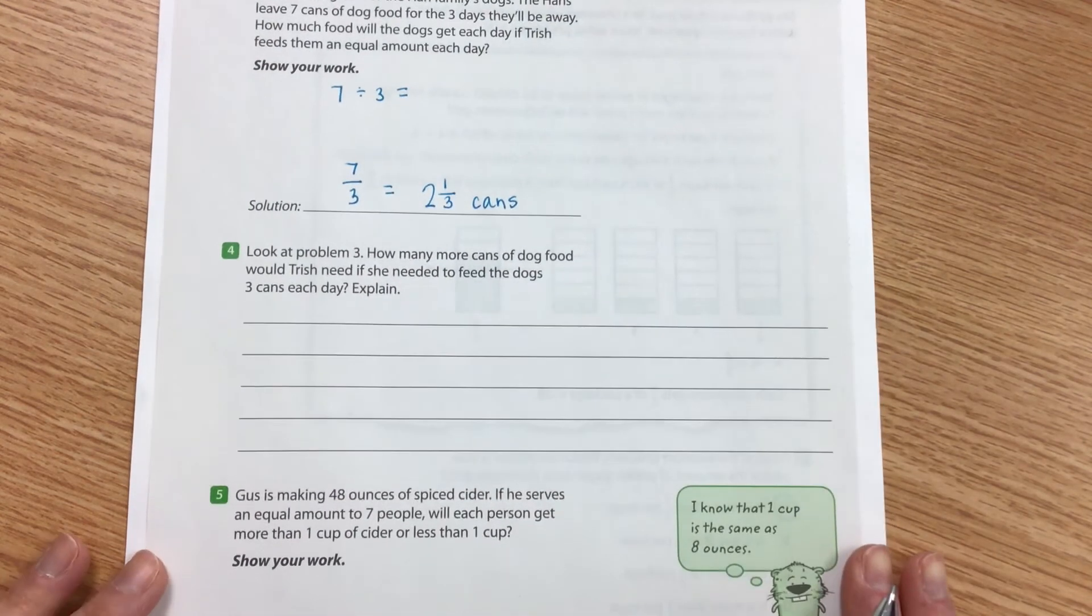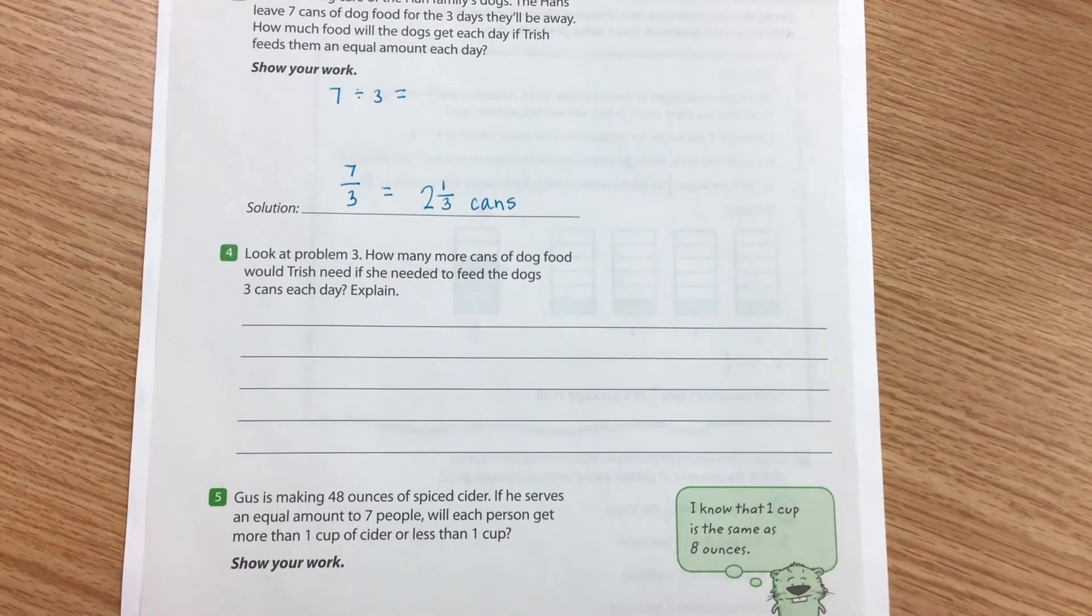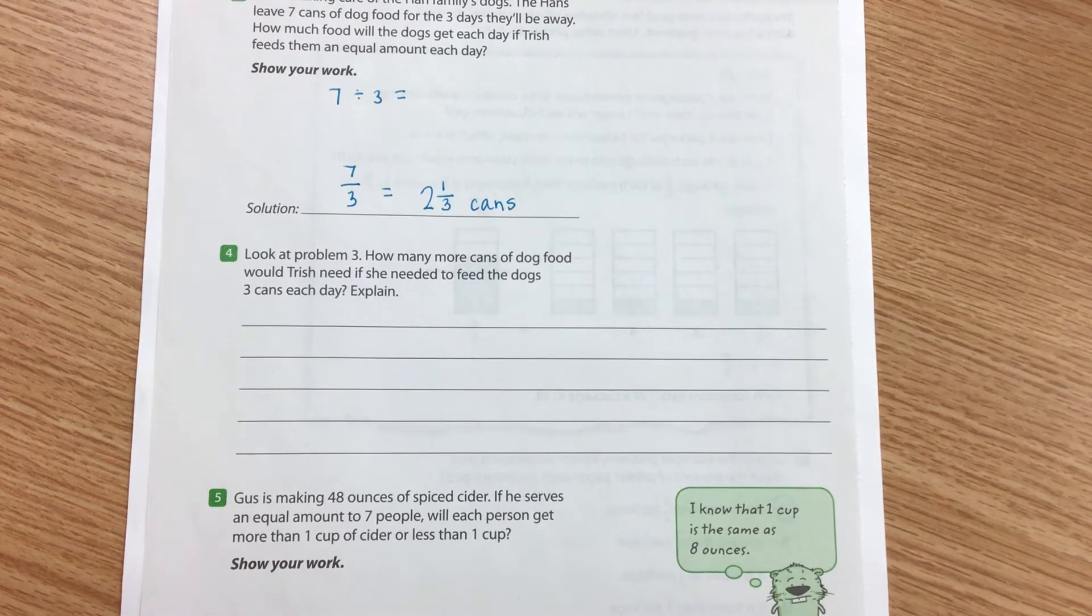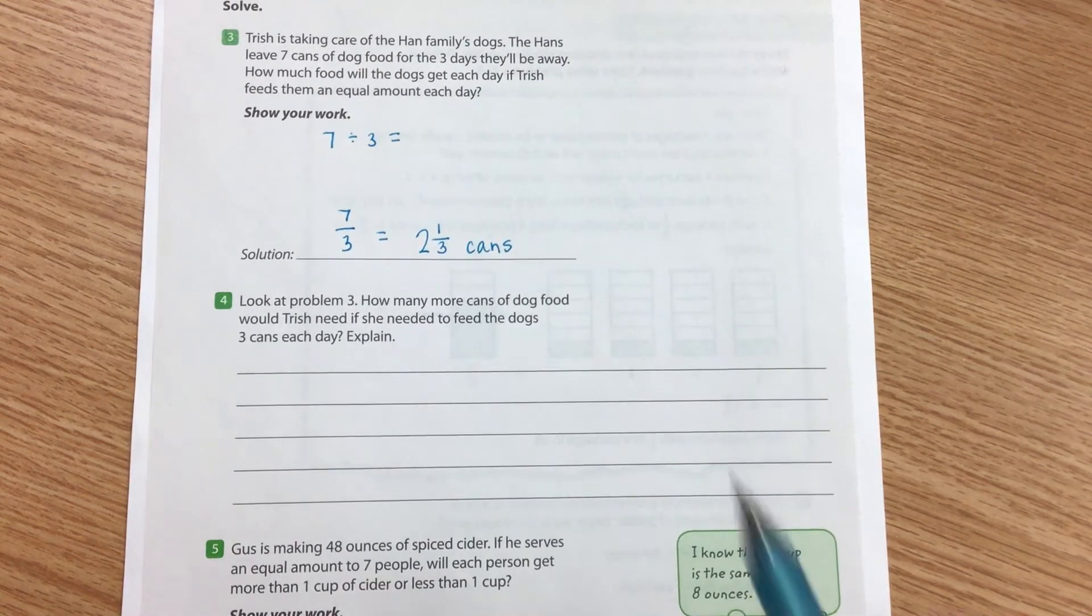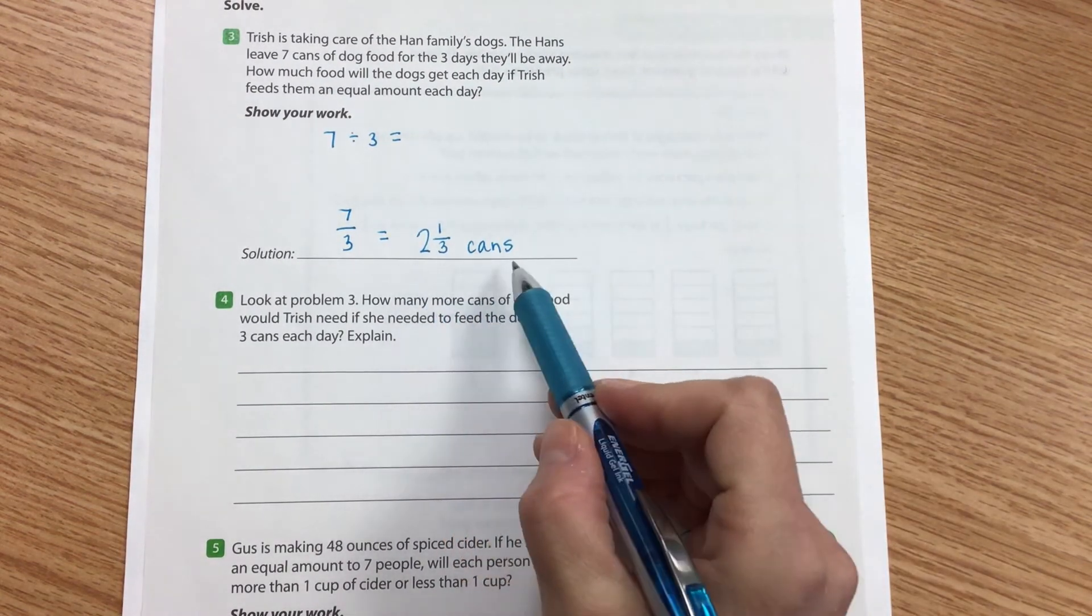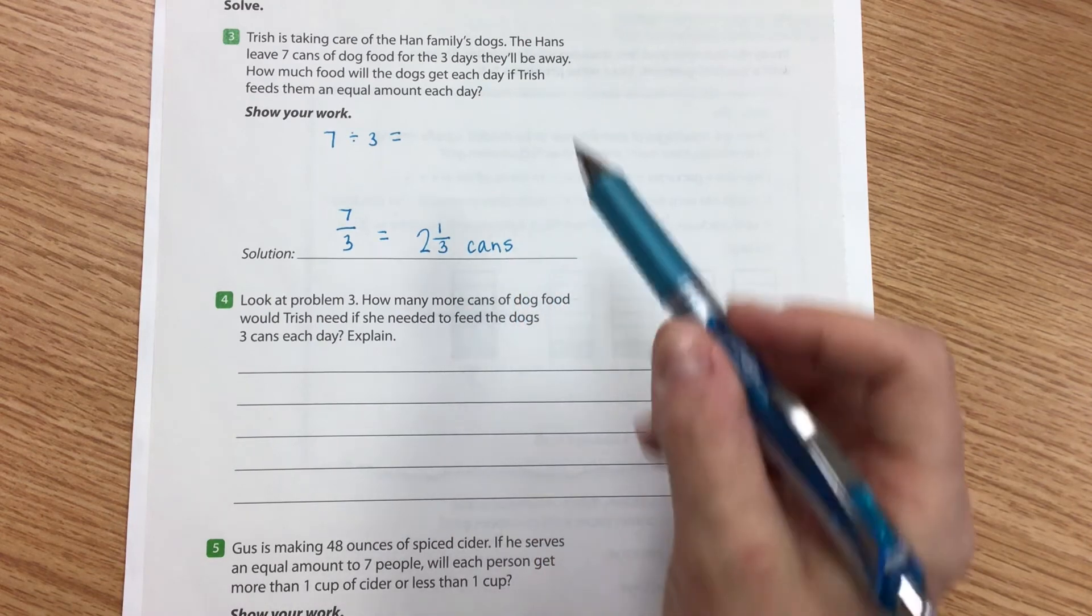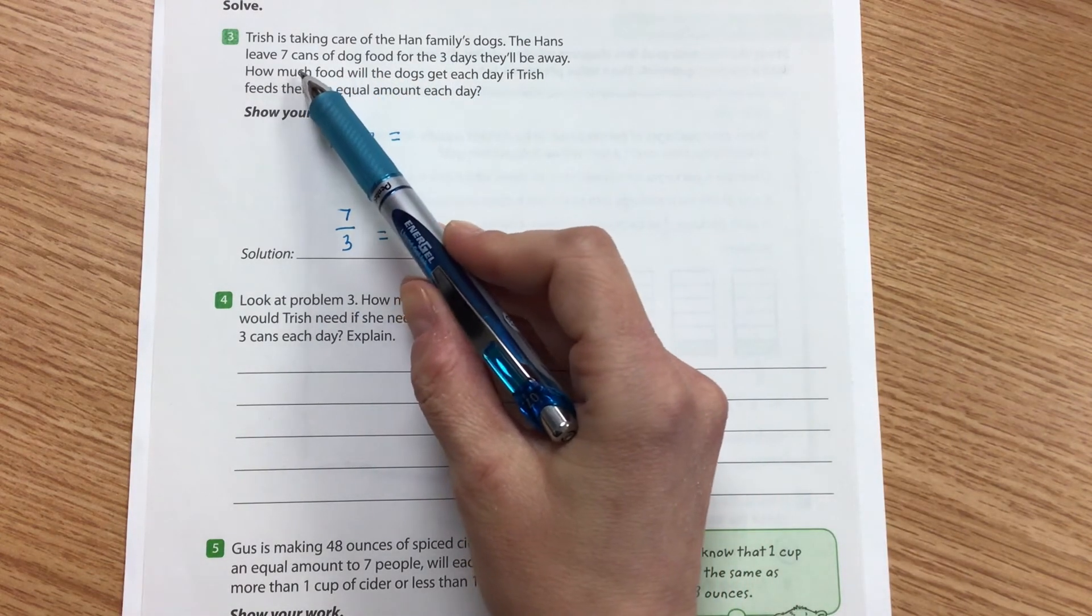Now number four says look at problem three. How many more cans of dog food would Trish need if she needed to feed the dogs three cans each day? So right now she's feeding them two and one-third cans each day and the Hans left seven cans of dog food.